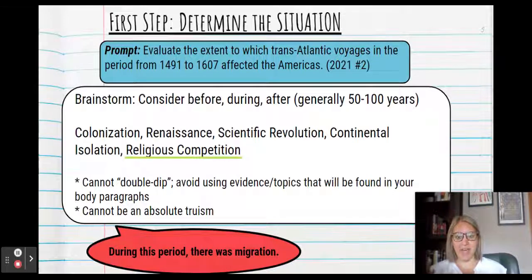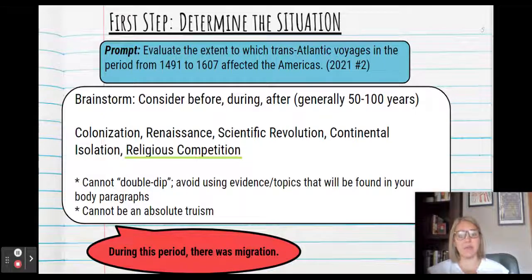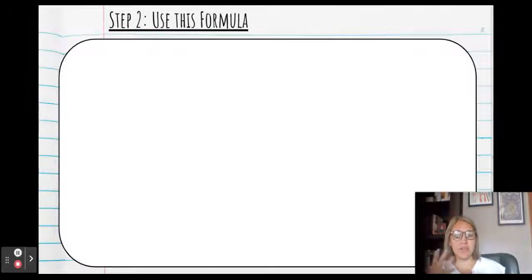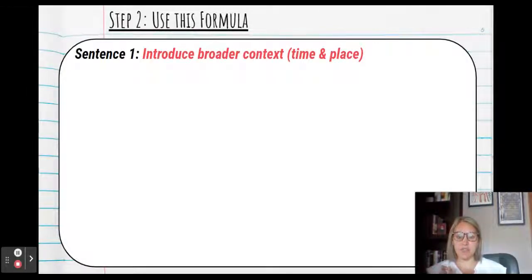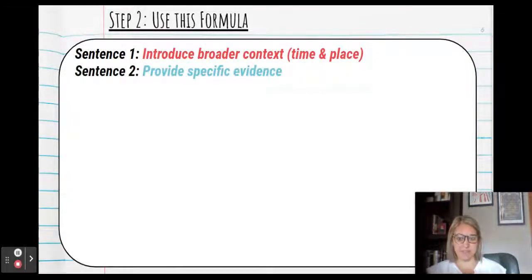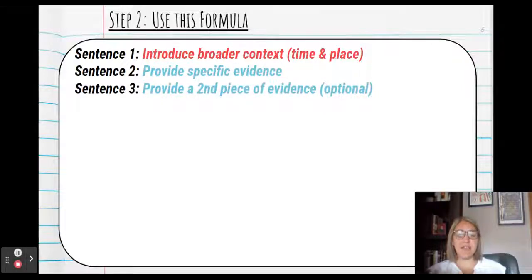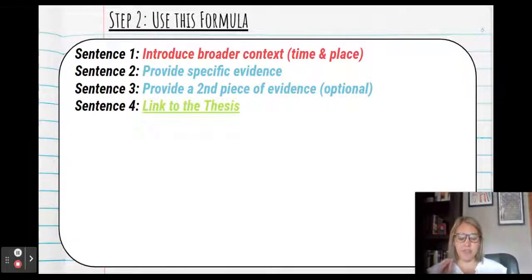So after you've determined the situation, what I'm going to use for my example is religious competition. So you're going to use this formula. Step one, introduce the broader context, focus on time and place. Step two, provide specific evidence. Three, provide a second piece of evidence. This is optional. I think it just ensures that you get the point, but sometimes if you're short on time or don't quite have the evidence, you can absolutely skip sentence three. And then the fourth, the most important, link to the thesis.